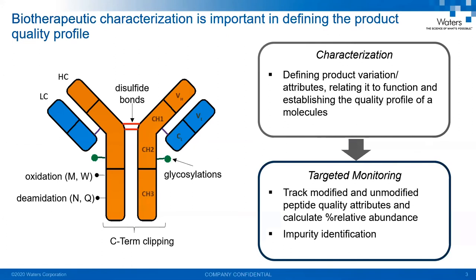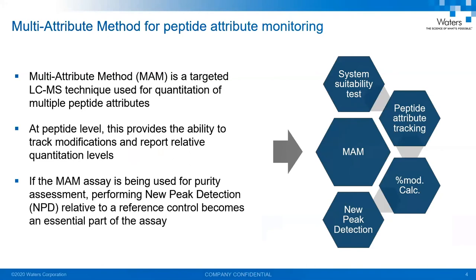These quality attributes are very closely monitored during the product life cycle using targeted monitoring techniques. Multi-attribute method is one of the popular analytical techniques currently being investigated or used by most biopharmaceutical organizations. It's an LC-MS-based targeted quantification method that tracks modifications or product quality attributes and determines the percent abundance level. If this assay is being used for purity assessment, we perform new peak detection, comparing peaks in the analytical sample to a reference control to determine any new emerging peaks.